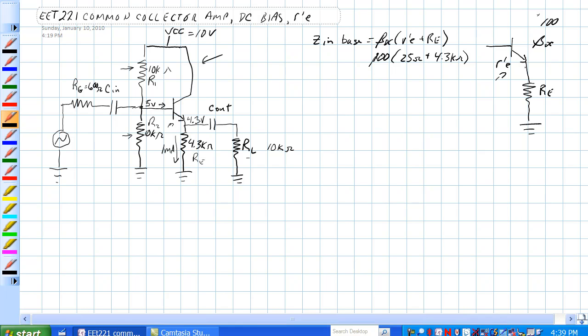But you know that happens to be in parallel through a cap and we're going to assume the cap has zero ohms of impedance. RL is 10k.